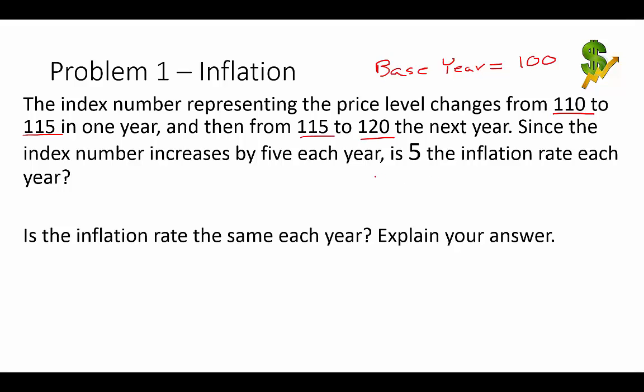That answers our first question. As it goes from 110 to 115 and then from 115 to 120, each of those are five incremental price level changes — not percentages and not dollar bills, just price level number changes. So it's not a 5% inflation rate each year. We can do a calculation: going from 110 to 115, the percentage change is really 4.5%. That's taking the current year minus the beginning point, divided by the beginning, then multiplying by 100. That's the first year's inflation rate: 4.5%.